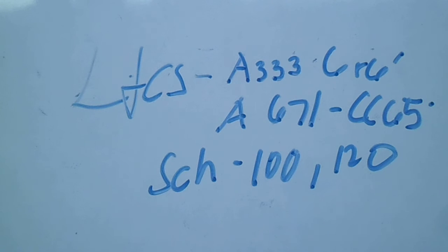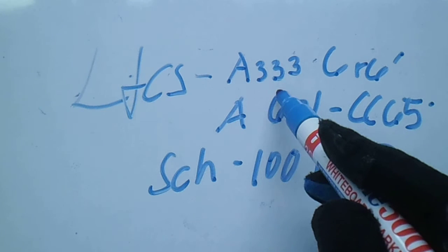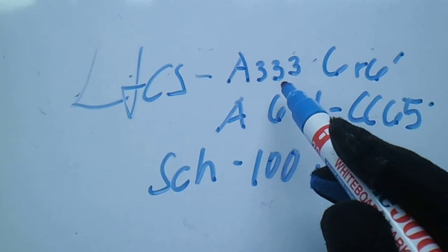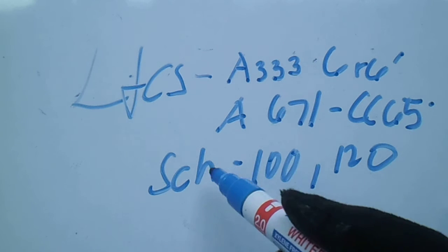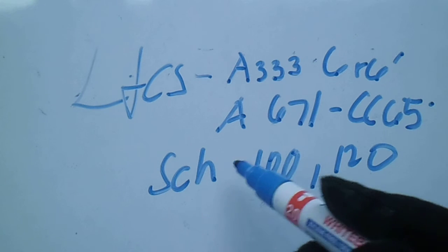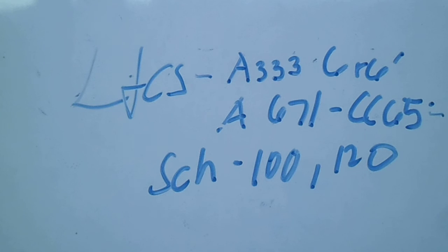The LTCS color combinations are: white plus red, and blue. For A333 Grade 6, the color combination is white plus red. For A671 TC65 it is blue. Remember: LTCS A333 Grade 6 uses the white-plus-red combination.